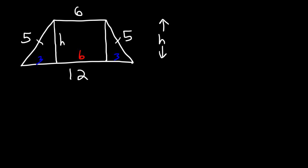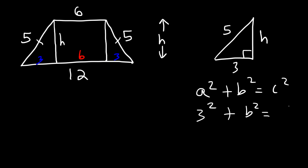Now we need to find the height. So let's focus on this triangle. So what we have is a right triangle with a base of 3 and a hypotenuse of 5. Let's calculate the height. So we need to use the Pythagorean theorem. A² + B² = C², where A is 3.